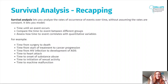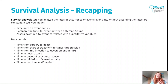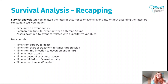Just to recap a little bit, because I know you've seen the theory about this: survival analysis lets you analyze the rates of occurrence of events over time without assuming that the rates are constant. It lets you model time until an event occurs, and compare the time to event between different groups — for example, age groups or different sex groups — and assess how time to event correlates with quantitative variables.